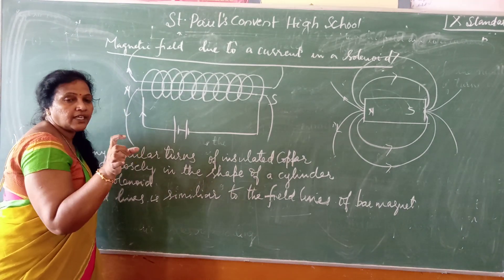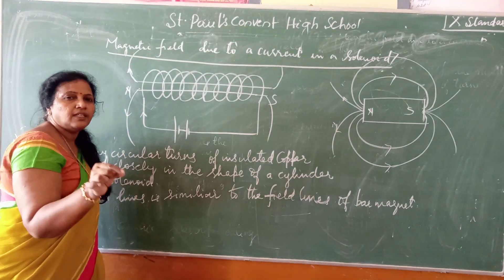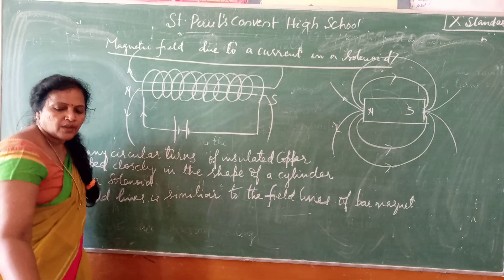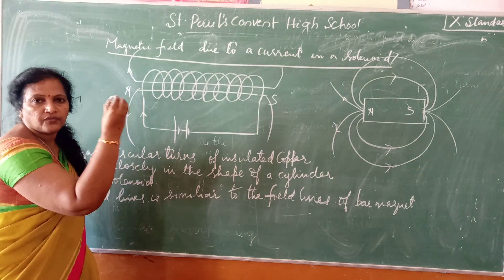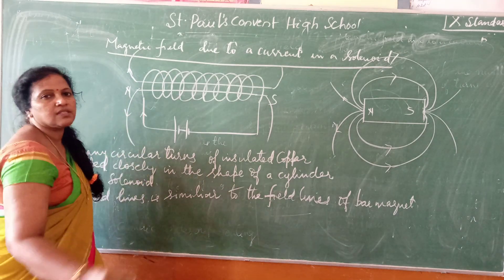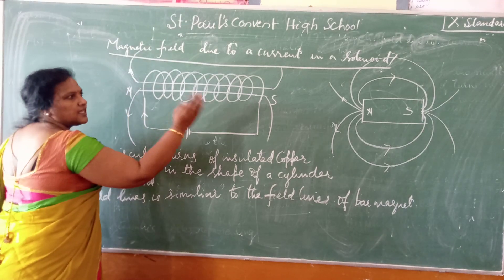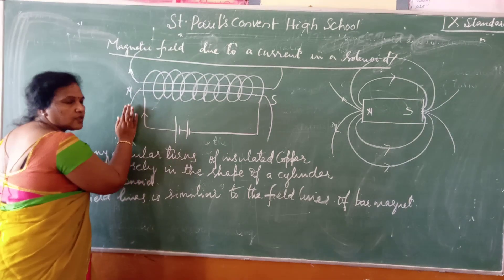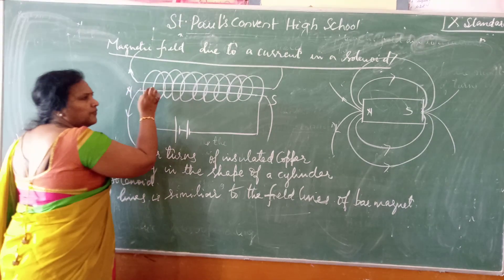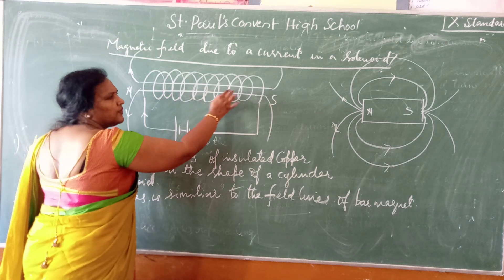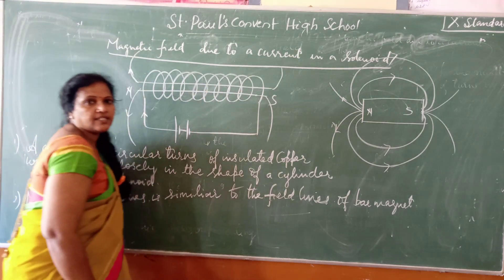The direction of the magnetic field will be the direction of the north pole of the compass needle. So in the same way you can see here also. But at the center, the magnetic field lines will be in the form of straight lines.